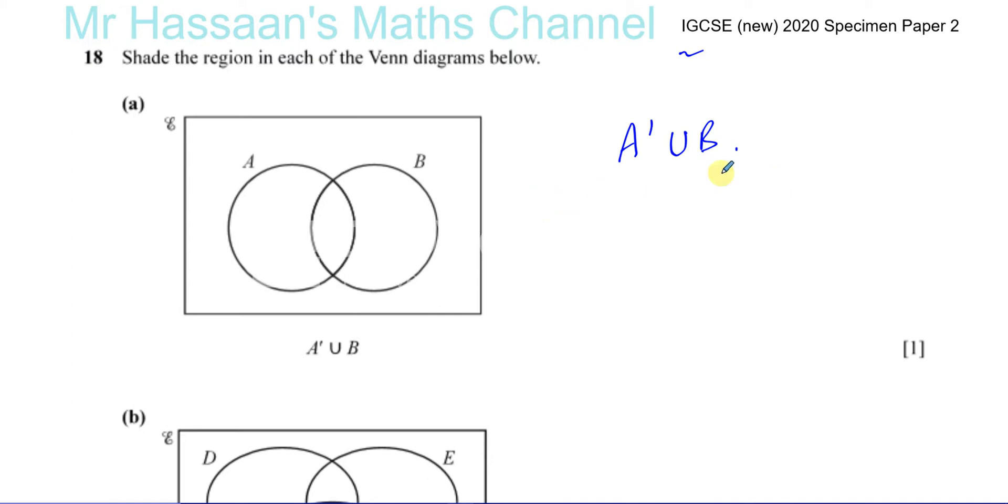Now the way I like to think about this is the union looks kind of like a smiley face, and the intersection which is the opposite, like this shape, is like a frowny face. So this guy is like in a good mood and this guy is in a bad mood.